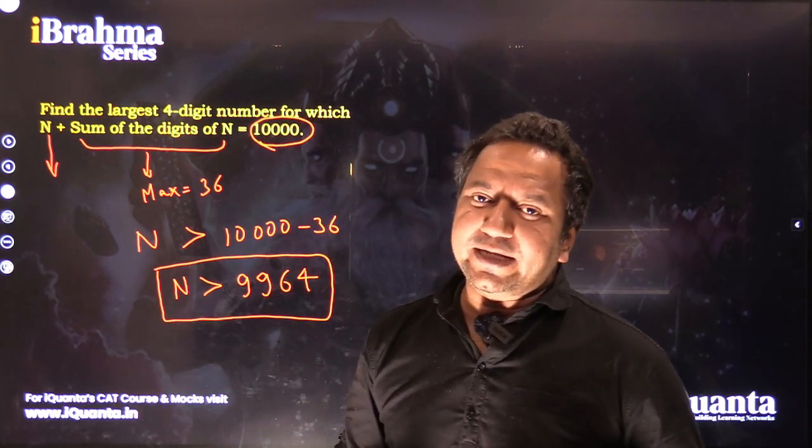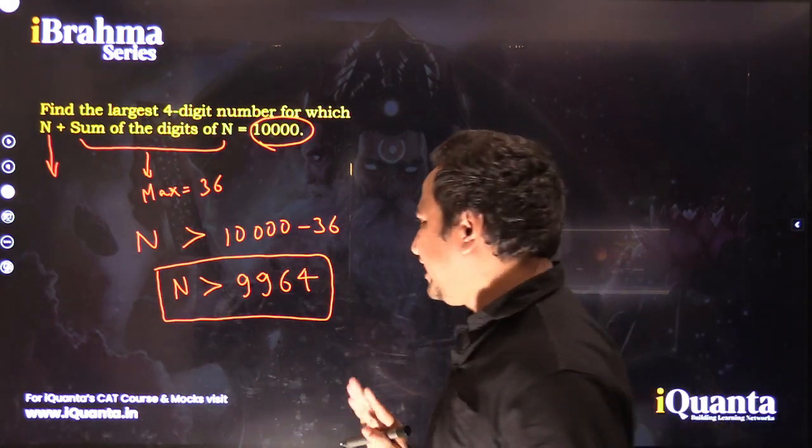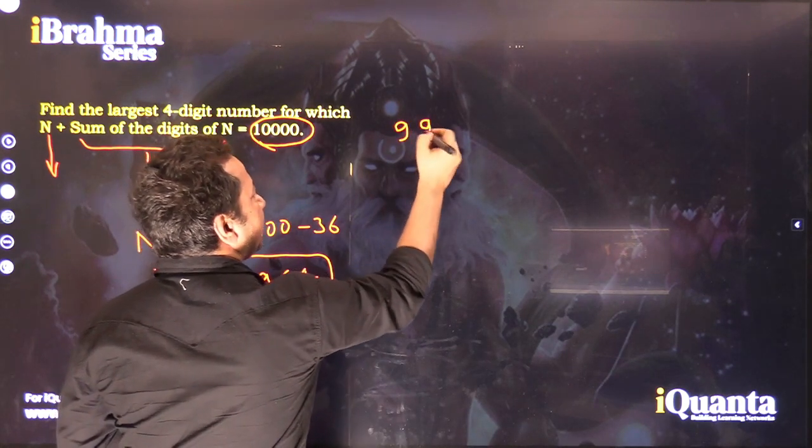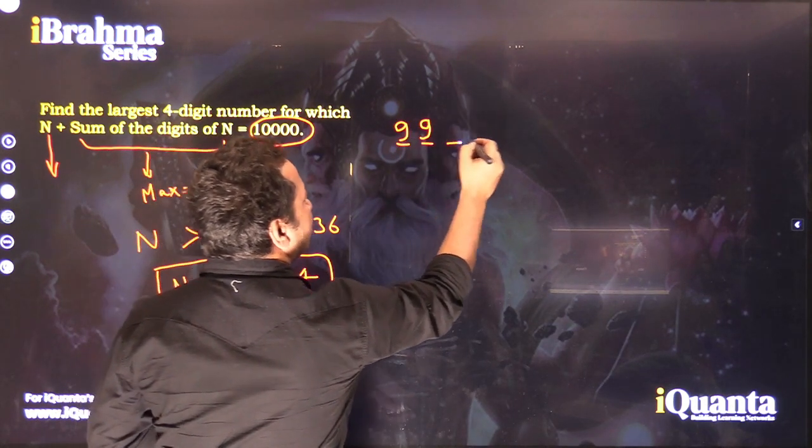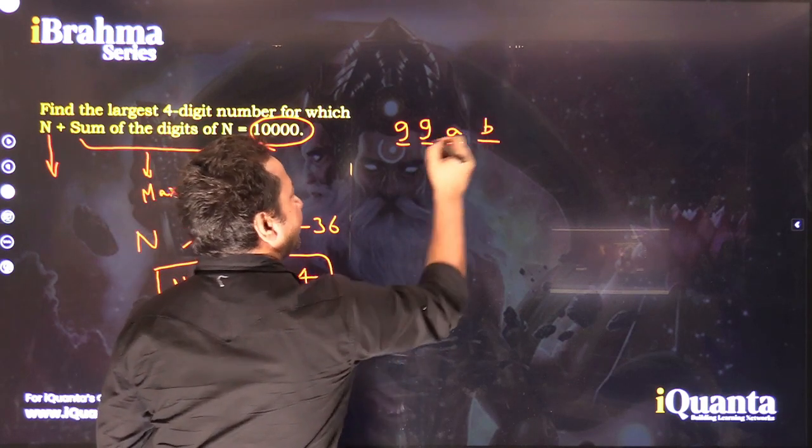We get to know one thing: the first two digits would definitely be 9 each. That means the number would be in this form: 9, 9, and two more digits. Let those digits be equal to A and B.